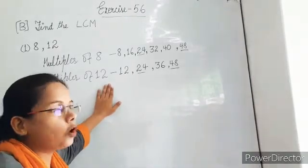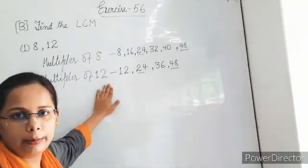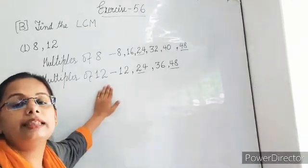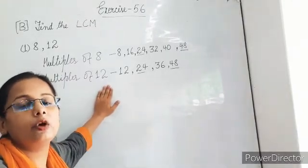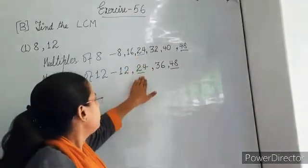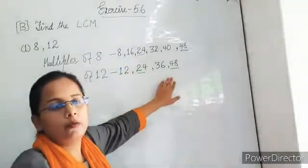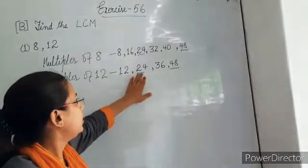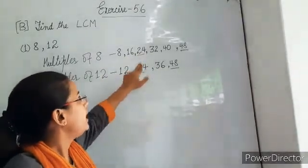But the question is not to find out the common multiple. Here we have the question to find the LCM — lowest common multiple. So the common multiples are 24 and 48. But which is the lowest common multiple? The lowest common multiple is 24.